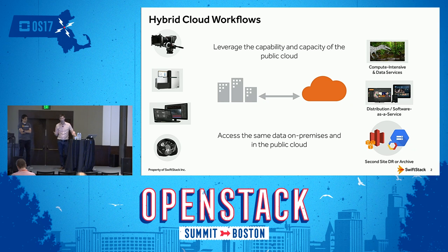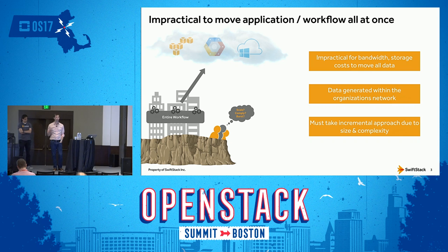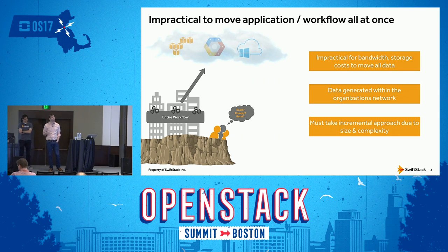A lot of times people are building applications in the public cloud where they may not feel comfortable running that application on their premises. They want to deploy that application as a service, synchronize some data to distribute it out in the public cloud, or have a second site for their data. Our thinking was: how can we have data in an OpenStack Swift cluster be on-premises and in the public cloud, synchronized so you could have the same data in both places? From a practical consideration, people couldn't move all their data at once — shifting 100% to the public cloud was untenable.